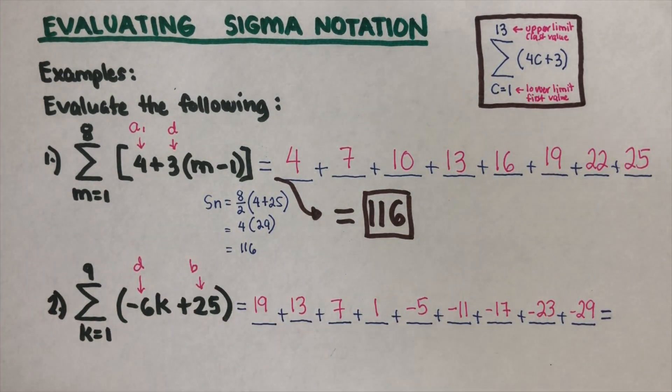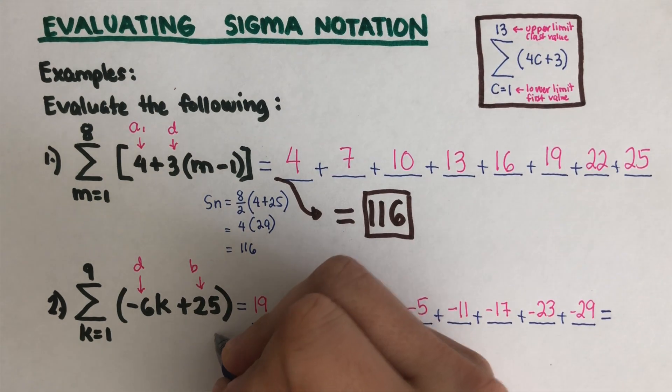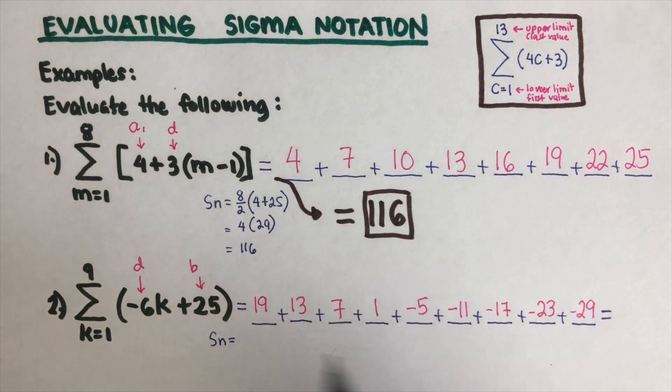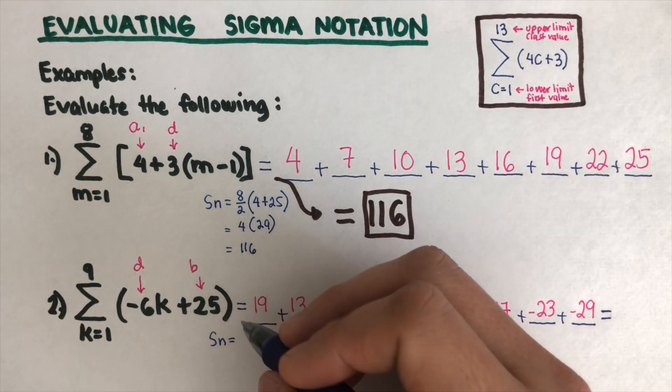To find the sum for this, we're going to use the equation again. So that would be Sₙ is equal to how many terms there are, so that is 9.